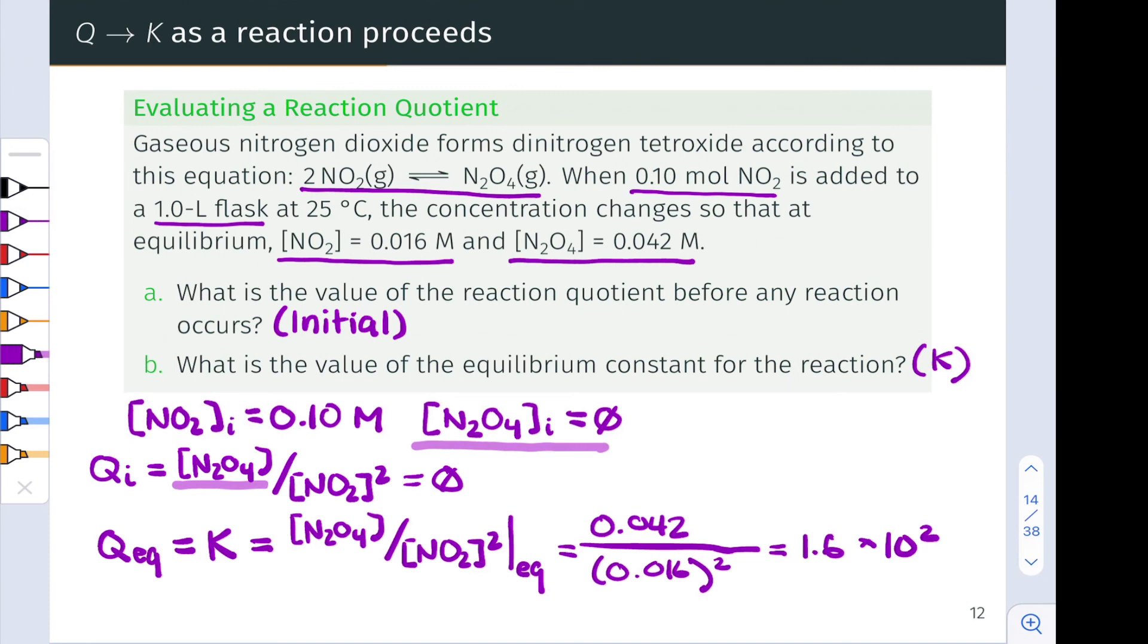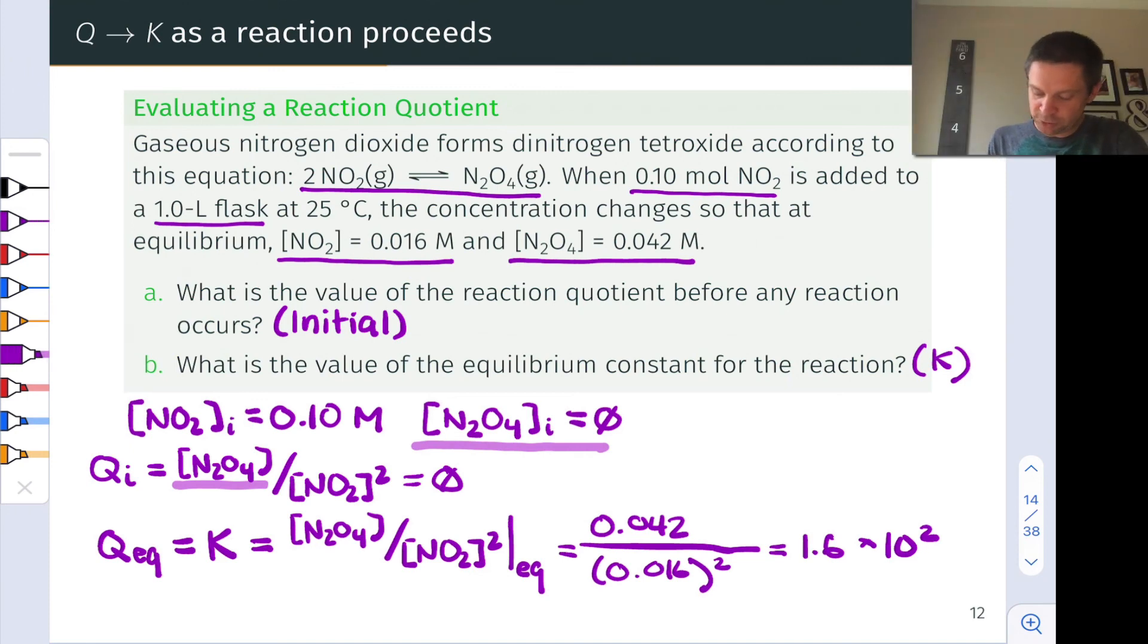So key here was recognizing that the value of Q in an equilibrium state must be equal to the equilibrium constant, essentially by definition. This is the magic of chemical equilibrium. And for the initial Q, we simply write the reaction quotient expression and then apply the initial conditions that are given in the problem, plugging in for each of the concentrations that appears in the reaction quotient expression.